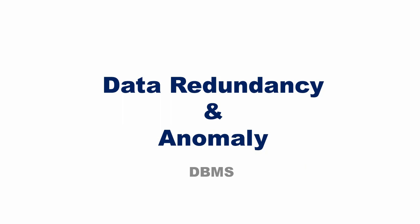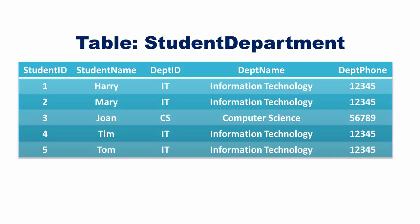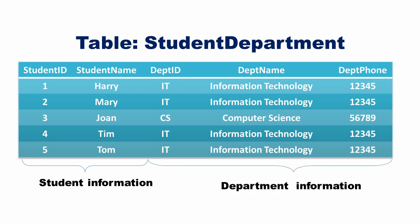In this video, let us learn about data redundancy which leads to data anomalies. Consider the table student_department having attributes: student ID, student name, department ID, department name, and department phone. The first two attributes represent student information and the last three belong to department information. Whenever a new student is inserted, the department information is repeated — the same piece of information is stored in the table multiple times.